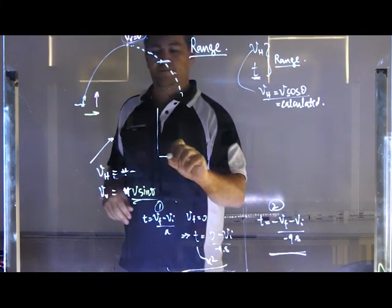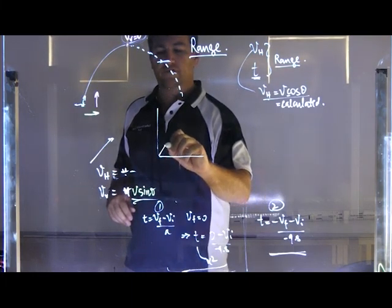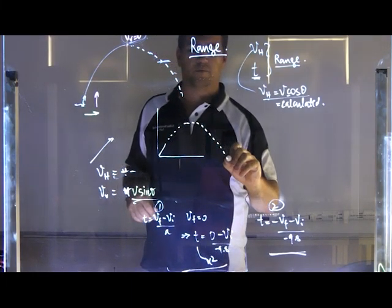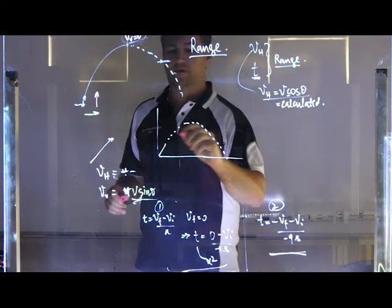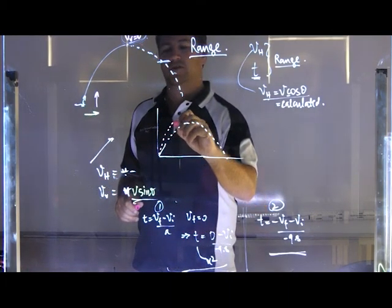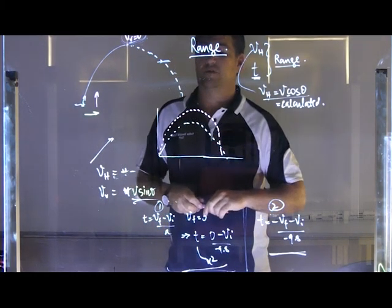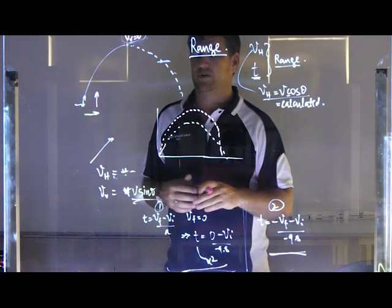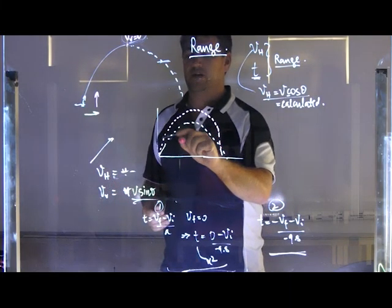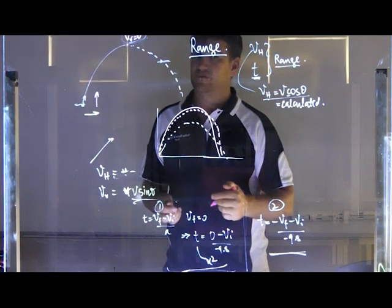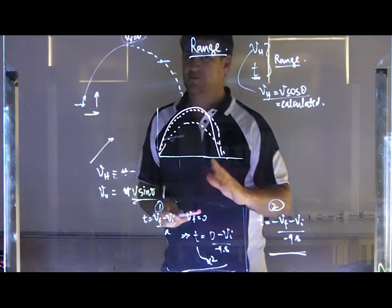So two projectiles. If I launch from 45, that's going to give me maximum range if we're launching from the ground and landing back at the ground. But if I get two different projectiles and I launch one from, say, 60 degrees, I'm going to launch it a little bit higher. So it's going to have a higher path, but it's not going to quite go as far as the 45. Remember, 45 is the maximum range angle.